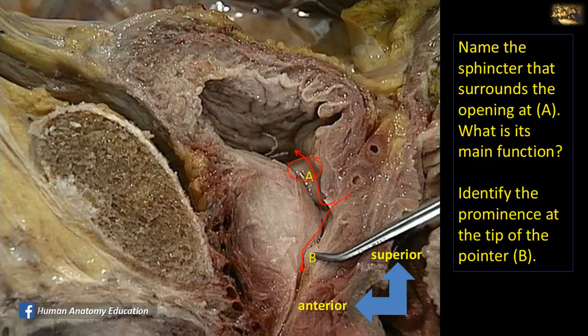The prominence at the tip of the pointer is within the prostatic urethra and is called the urethral crest, on top of which, on either side, open the ejaculatory ducts.